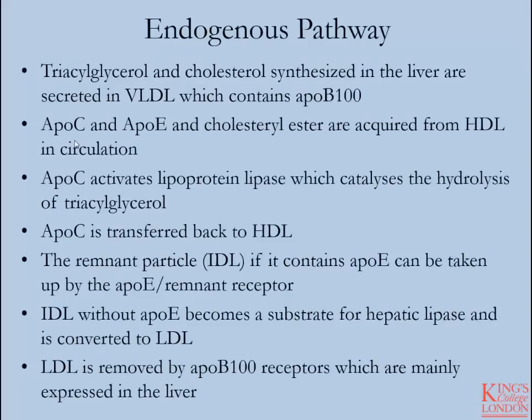Specific points on the endogenous pathway: triacylglycerol and cholesterol can be either synthesized in the liver or obtained from circulation, whether that be from chylomicron remnants or from adipocyte non-esterified fatty acid liberation. ApoC and ApoE, as well as cholesterol ester, are acquired from HDL in circulation. ApoC is required for the activation of lipoprotein lipase, which catalyzes the hydrolysis of triacylglycerol.